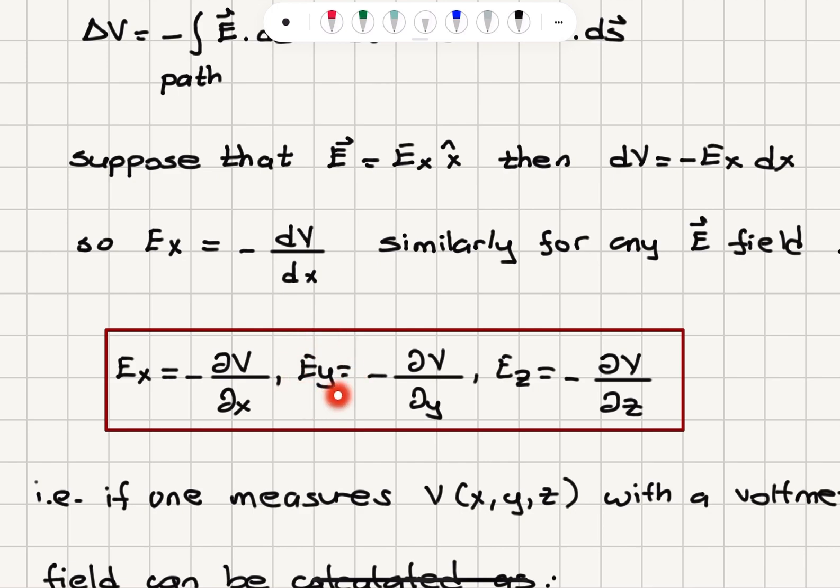Y-component of the electric field minus partial derivative of potential with respect to y-variable, and z-component of the electric field is minus partial derivative of the potential with respect to z.